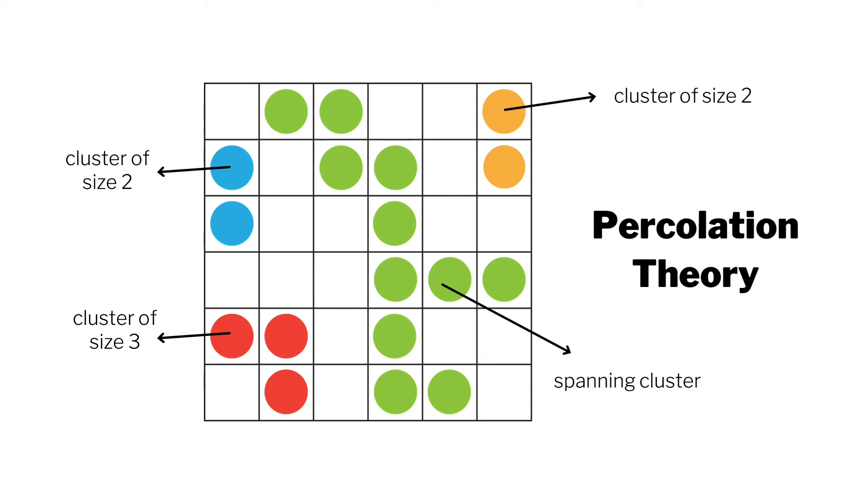we will analyze the Ising model under the lens of percolation theory, which also exhibits a phase transition. However, it is concerned with the connectivity and behavior of clusters, where the presence of the spanning cluster signifies the change in the system.